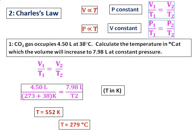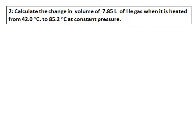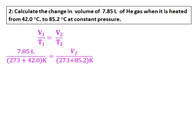In all gas law questions, wherever temperature appears, it must be in Kelvin — that is Celsius plus 273. Second question: calculate the change in volume of 7.85 liters of helium gas when it is heated from 42.0 degrees Celsius to 85.2 degrees Celsius at constant pressure. Since pressure is constant, we only need to consider volume and temperature, using the formula V1/T1 = V2/T2.